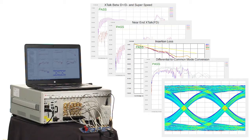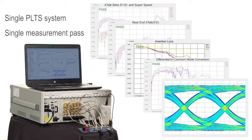All of these measurements can be done with one Keysight N1930B physical layer test system utilizing the PXI Vector Network Analyzer system in one measurement pass.